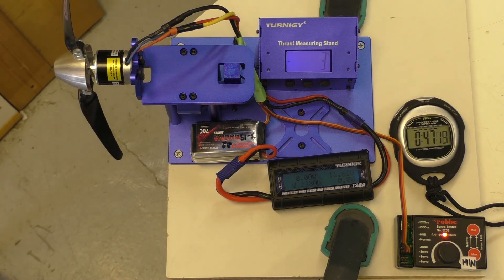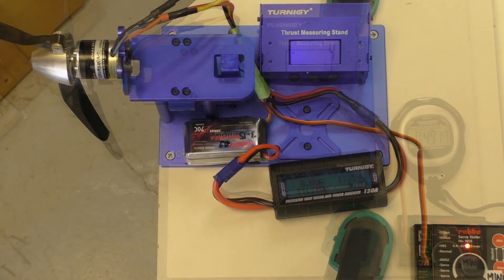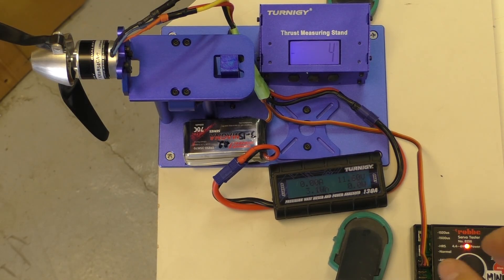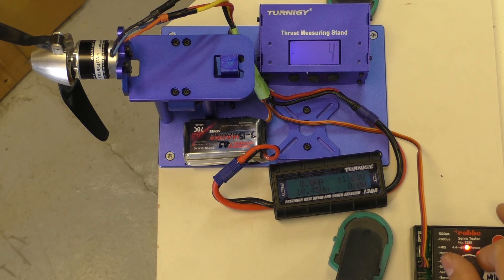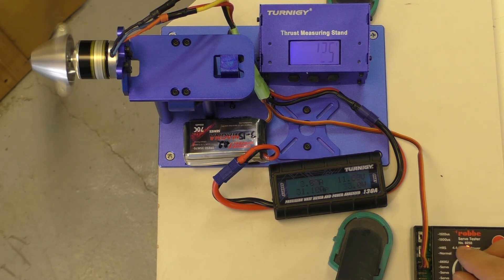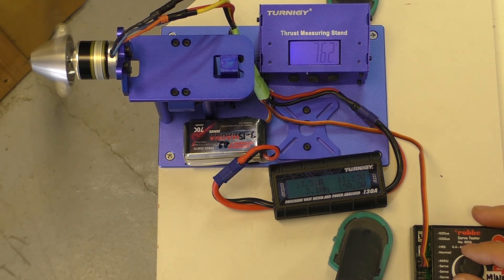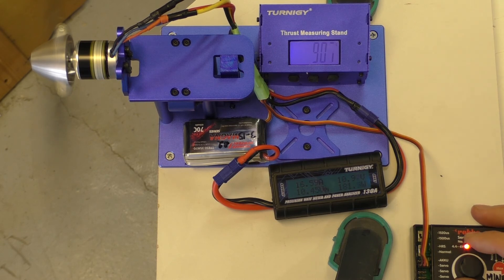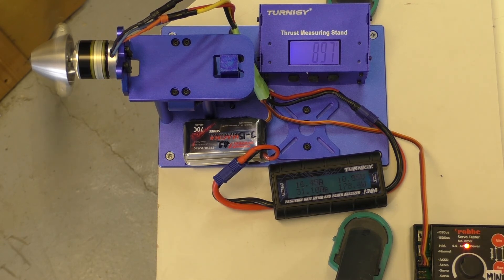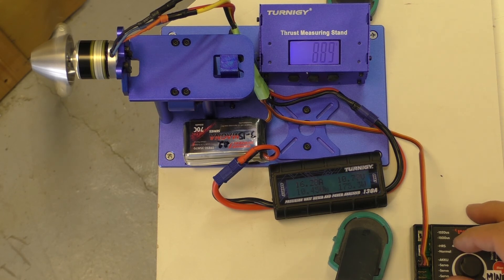That was some serious power compared to the old one. So let's see how much power it draws when we get to 900 grams of pulling power. So it's 16 and a half amps and that's pretty much the optimum power point.